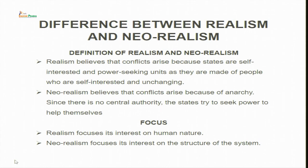The key difference between classical realism and neorealism: classical realism believes conflict arises because states are self-interested and power-seeking, like human beings. But neorealism believes conflict arises because of anarchy, not human nature — since there is no central authority, states seek power to help themselves. It is the structure of the system, not human nature, that determines the action of states. Classical realism focuses on human nature — hence it is also called biological realism — while neorealism focuses on the structure of the international system.